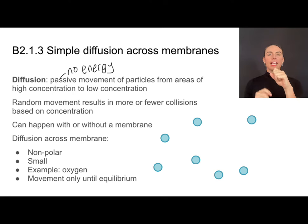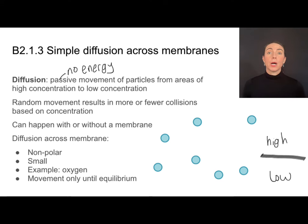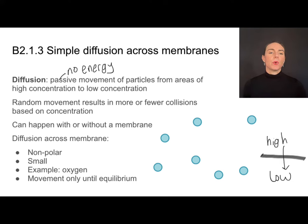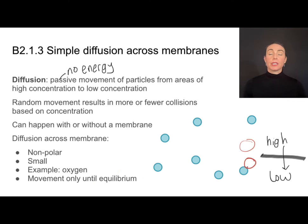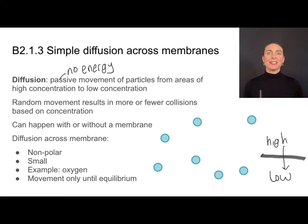If you think about spraying perfume in the air, those molecules just diffuse. When it comes to going across a membrane, molecules move from high concentration to low concentration, again without the input of energy. Things that can diffuse across the membrane are small, non-polar molecules like oxygen. That movement continues until equilibrium is reached — when concentrations are the same on either side of the membrane — at which point net diffusion stops.